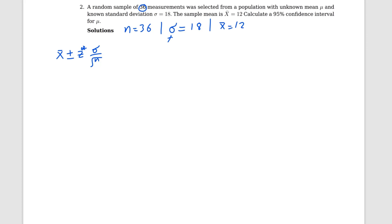Now, x-bar, sigma, and n are all given. The only thing we need to find is z-star. How do we find z-star? We go to the 95% level. What does 95% mean? 1 minus alpha equals 0.95, so alpha equals 0.05.